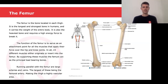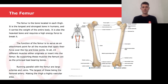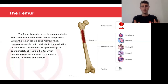In all there are 23 different muscles that either originate or insert into the femur. By supporting these muscles the femur acts as the principal load-bearing bone. Running parallel with the femur are also large arteries and veins. The largest of these being the femoral artery, which makes the thigh a highly vascular area.